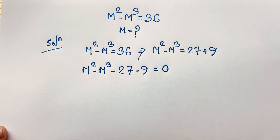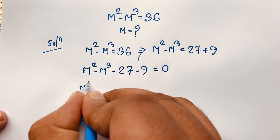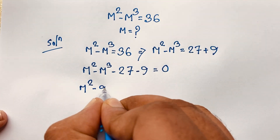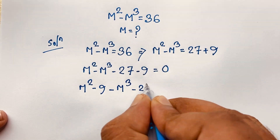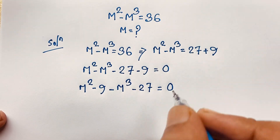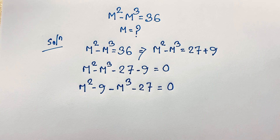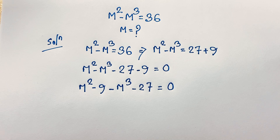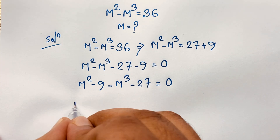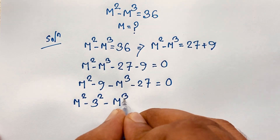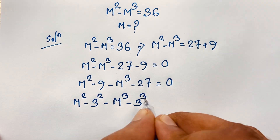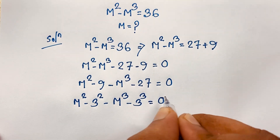Now here m squared, then this negative 9 here, and this minus m cubed and minus 27 is equal to 0. Now I solve this step by step. Negative 9 — you know that negative 9 is 3 to the power 2, so here m squared minus 3 to the power 2, minus m cubed and minus 27, and 27 is 3 to the power 3, is equal to 0.